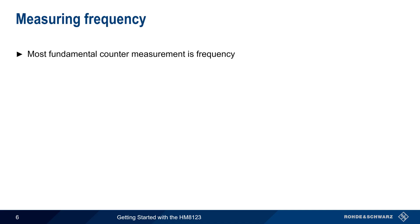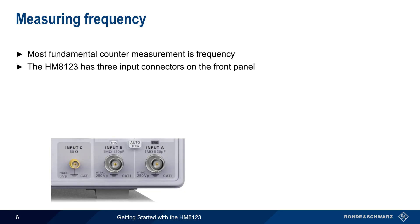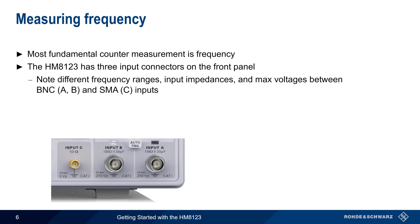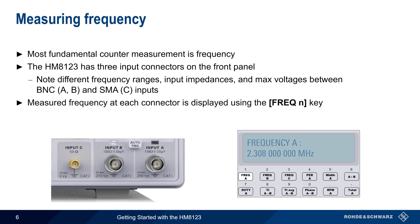The most fundamental counter measurement is frequency, and this can be measured on each of the three front input panel connectors of the HM8123. Note that the two BNC connectors for input A and B, and the SMA connector for input C, have different frequency ranges and maximum voltages. And the input impedance of C is fixed at 50 ohms. The measured frequency at each connector can be displayed by pressing the corresponding frequency key, for example, frequency A, to see the frequency on channel A. Note that only one input frequency can be displayed at a time.